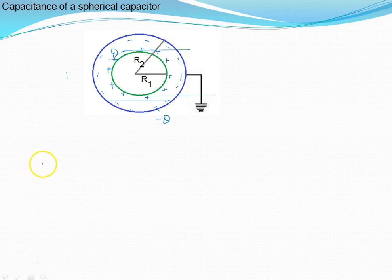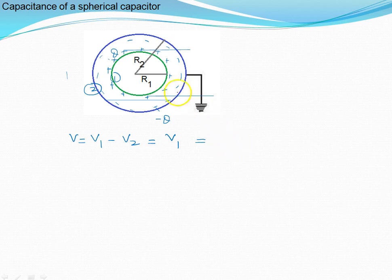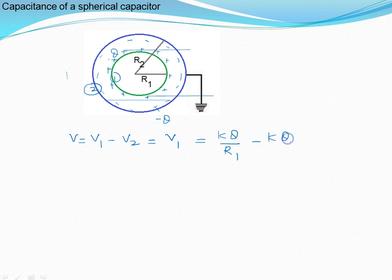The potential difference between the two conductors is V = V1 minus V2, where conductor 1 is the inner sphere and conductor 2 is the outer sphere. The second conductor is grounded, so its potential is 0, meaning V = V1. Potential V1 equals KQ/R1 due to charge +Q on R1, plus the potential due to charge minus Q on R2, which is minus KQ/R2.